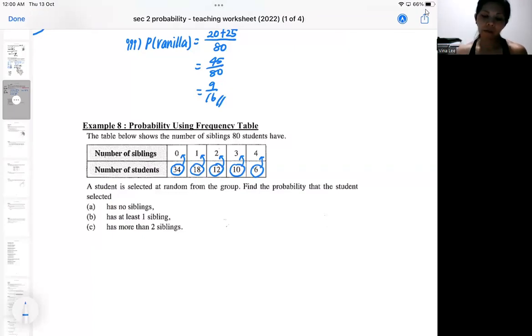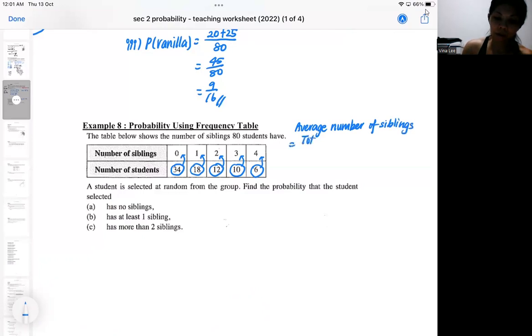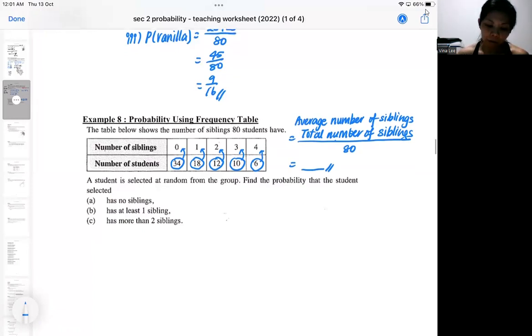So you might want to go and think about it. If I want the average number of siblings, I will need the total siblings. That means the average number of siblings each student has. So I will need the total number of siblings divided by the total number of students. So I'm going to add up all the numbers, all their siblings. And then I divide by 80 students. So you can go and think about it. But right now, my concern is not getting the mean. My concern is to interpret the probability.